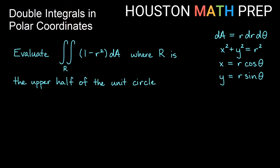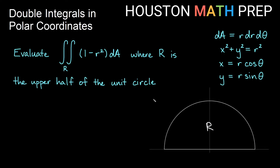Let's look at an integral already set up for us in polar. We want to evaluate the double integral over the region of 1 minus r squared dA, where the region is the upper half of the unit circle — radius 1. We replace dA with r dr d theta, so we evaluate the double integral of 1 minus r squared times r dr d theta.